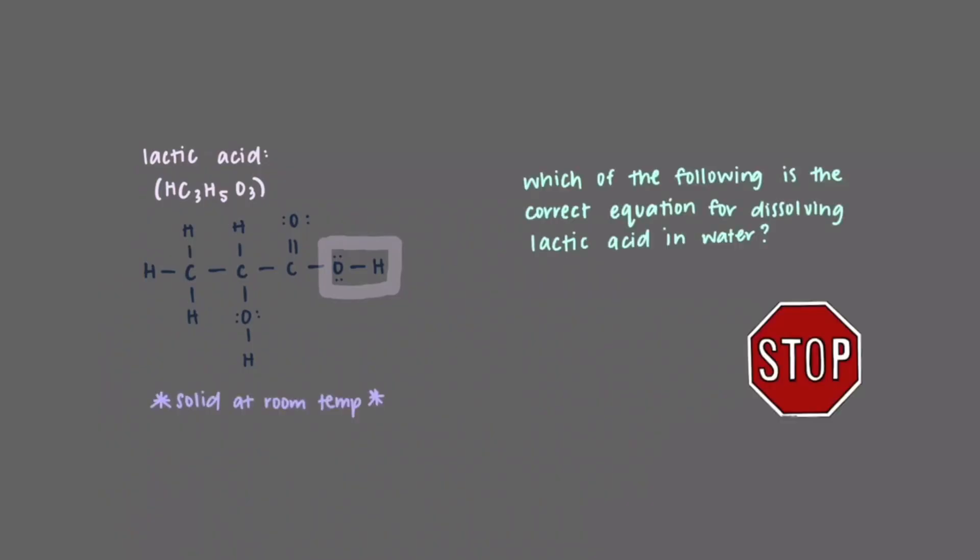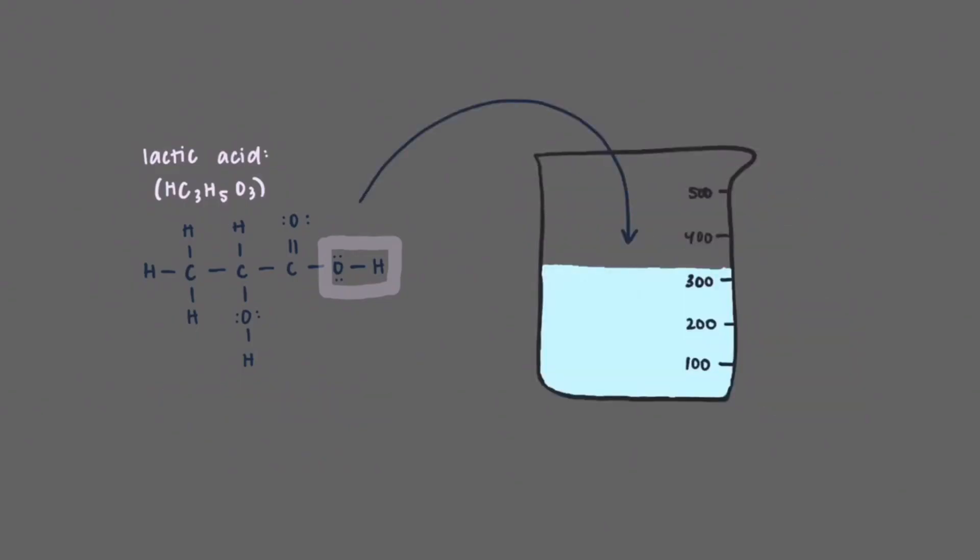One last example before we conclude, lactic acid. Notice that there is a covalent bond between the hydrogen and one of the oxygen atoms. Pure lactic acid is a solid at room temperature. Which of the following is the correct equation for dissolving lactic acid in water? Dissolving this molecular compound will result in aqueous lactic acid. This compound won't break up in the same way that we've discussed after it dissolves. What happens after it dissolves is the topic of another video on acids and bases.